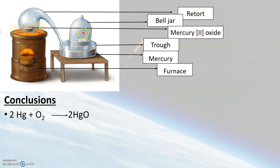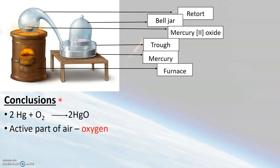All the oxygen present in the bell jar and retort was used up by mercury on heating to form mercury oxide. This is the reason why the level of mercury in the trough rose by about one-fifth of the original volume. From this experiment, Lavoisier concluded that the active part of air removed by mercury was named oxygen, and the remaining inactive part present in the bell jar was named nitrogen gas. This experiment is an experimental evidence to prove the components present in air.